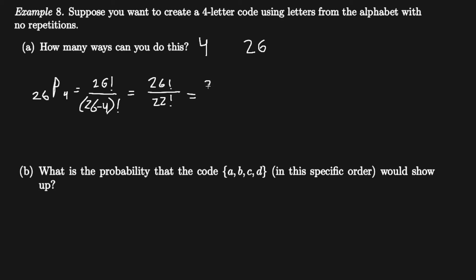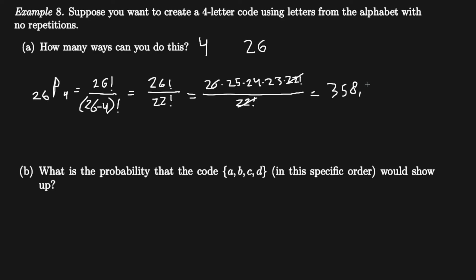Doing some algebra, we get 26 factorial over 22 factorial. We can simplify by writing 26 factorial as 26 times 25 times 24 times 23 times 22 factorial, all over 22 factorial. The 22 factorials cancel, and multiplying the remaining terms gives us 358,800. So there are 358,800 ways to create the code.